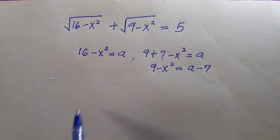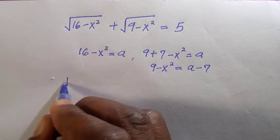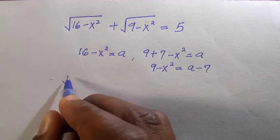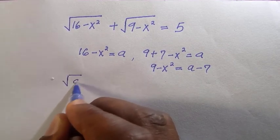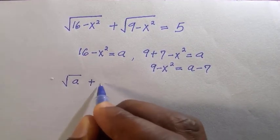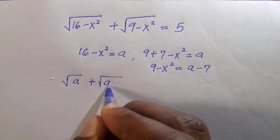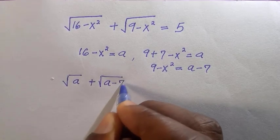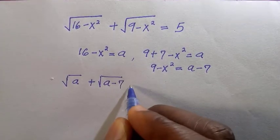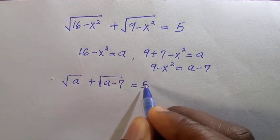So by replacing it in the above, we have the root of a plus root of (a minus 7) equals to 5.